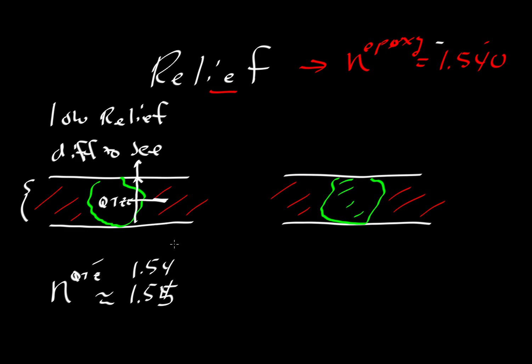But let's say we took a look at a different kind of mineral. Let's say we have something like garnet. Now garnet can have a range of values, so we'll just say we have a value of 1.7. Now you might ask, if you looked at the prior video...